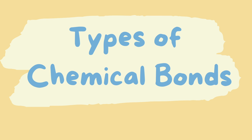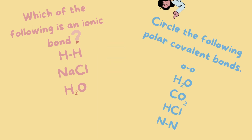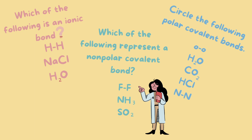Hello everyone! Today we're going to be reviewing types of chemical bonds. On your ATITs exam, you might be presented with a question like: which of the following is an ionic bond? Or circle the following polar covalent bonds? Or which of the following represents a non-polar covalent bond? By the end of this video, you are going to be able to answer all of these questions confidently. Let's go ahead and get started.